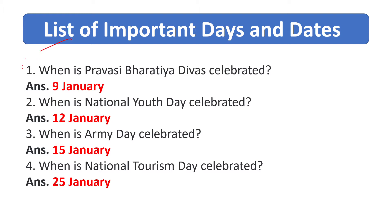LIST OF IMPORTANT DAYS AND DATES. When is Prawasi Bharatiya Divas celebrated? 9th January. When is National Youth Day celebrated? 12th January. When is Army Day celebrated? 15th January.